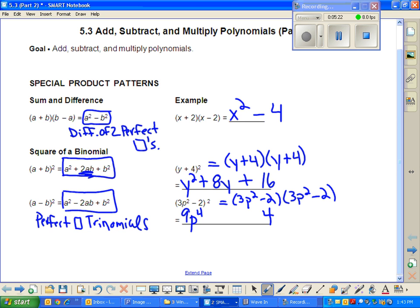And then the inside is always 2 times your first times your last. I got 2 times my first times my last. So I'm going to take 2 times 3P squared times 2. That's like 4 times 3P squared or 12P squared. The last symbol is always a plus. The second symbol will be a minus.